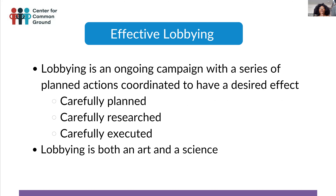Effective lobbying is an ongoing campaign with a series of planned actions where we want to achieve results: get a bill introduced, get co-sponsors, get a bill passed, get the executive to sign the bill. That means our lobbying campaign has to be carefully planned, carefully researched, and carefully executed. Lobbying is both an art and a science.